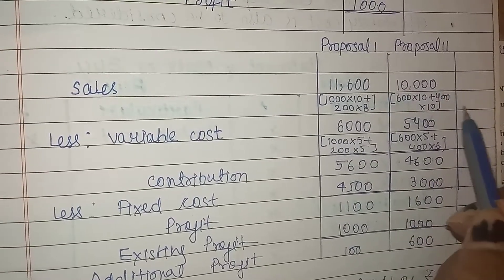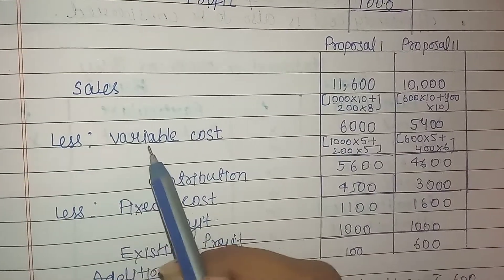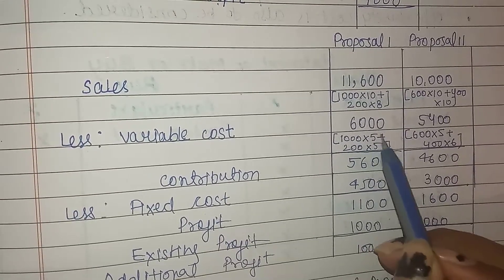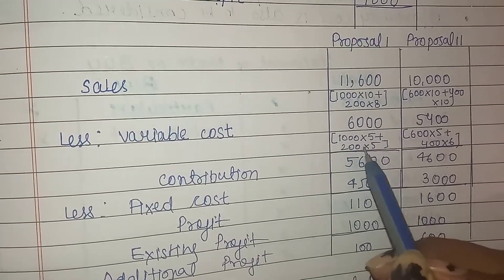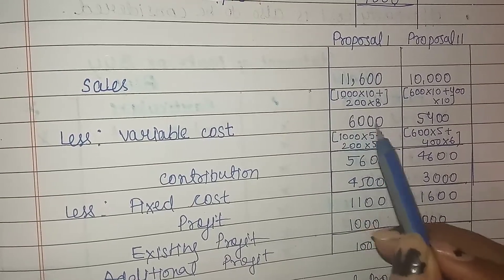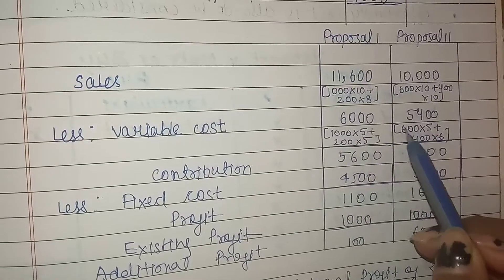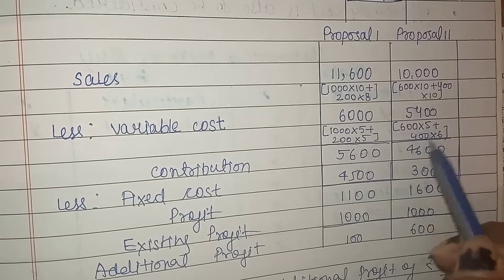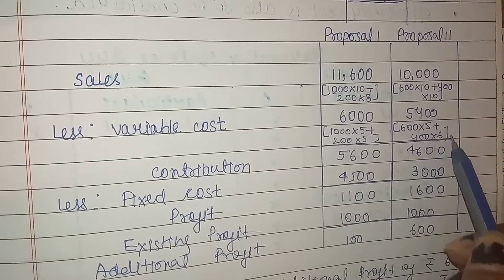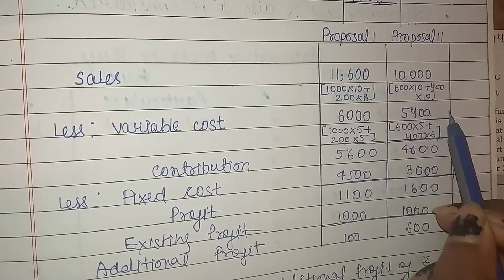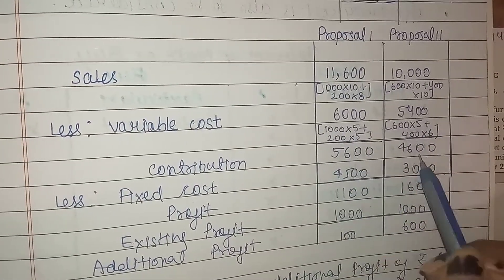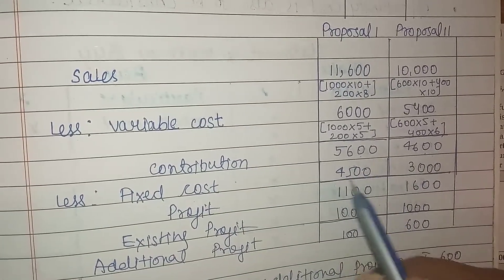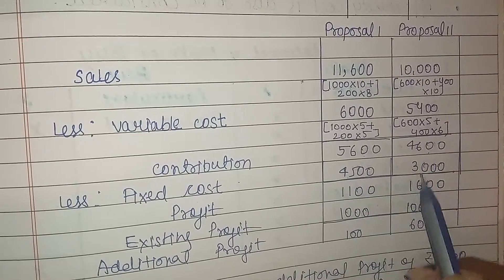Now less variable cost. For Proposal 1: Variable cost = (1000 × ₹5) + (200 × ₹5) = ₹6,000. For Proposal 2: Variable cost = (600 × ₹5) + (400 × ₹6) = ₹3,000 + ₹2,400 = ₹5,400. Fixed cost for Proposal 1 increased by ₹500, so it becomes ₹4,500. Fixed cost for Proposal 2 reduced to ₹3,000.